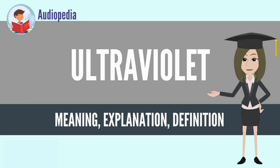Ultraviolet rays are invisible to all humans, although insects, birds, and some mammals can see near UV.